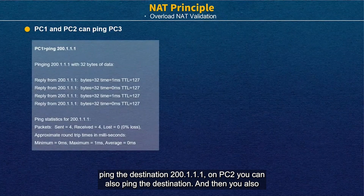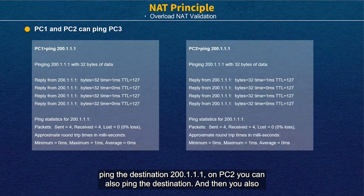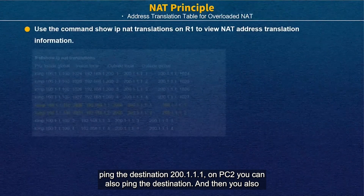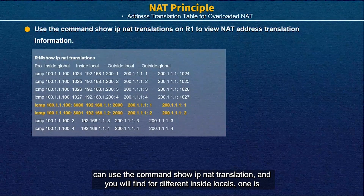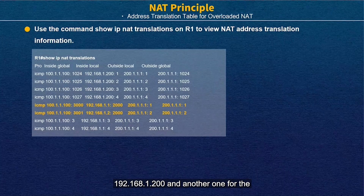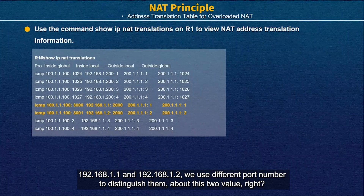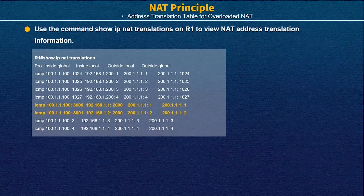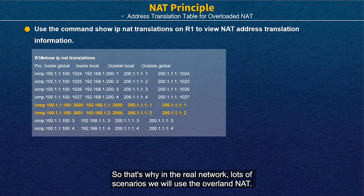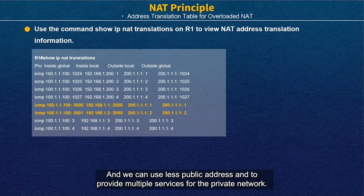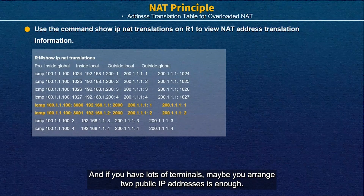On PC1, you can ping destination 200.1.1.1. On PC2, you can also ping the destination. Then use the command 'show ip nat translation'. You will find different inside local addresses: 192.168.1.200 and 192.168.1.1 or 1.2 are distinguished by different port numbers. That's why in real networks, we use overload NAT — it allows fewer public addresses to provide service to multiple private terminals. Even with many terminals, two public IP addresses may be enough.